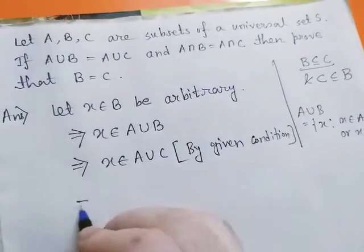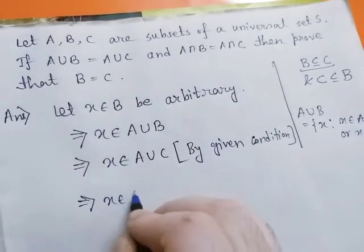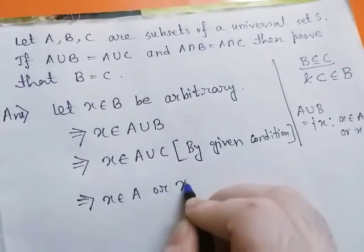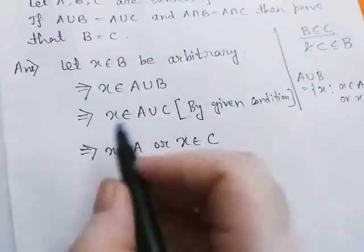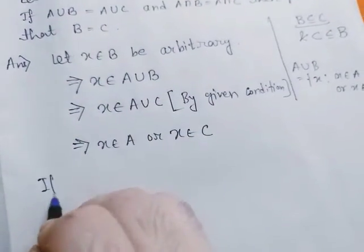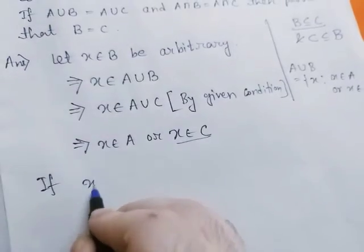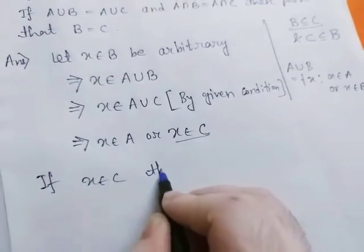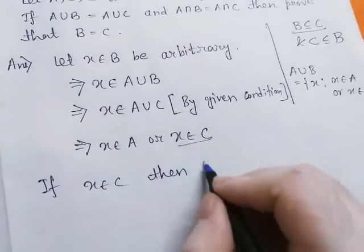This implies x belongs to A or x belongs to C. Now if x belongs to C, then we have B subset of C.